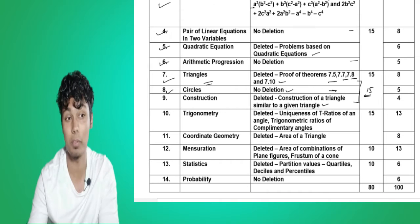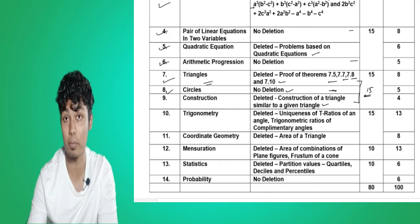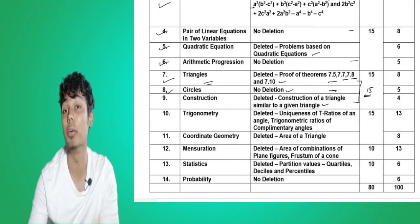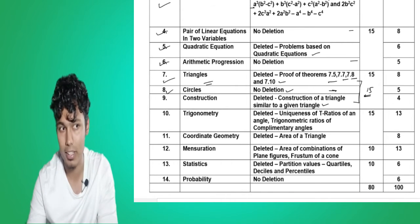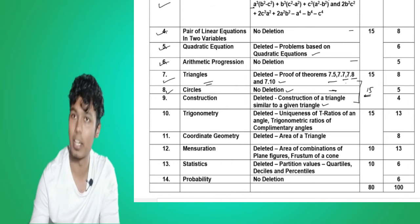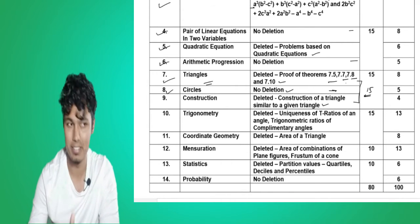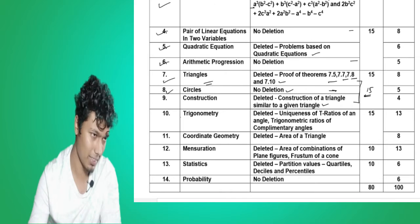From these three chapters — seven, eight, and nine — fifteen marks are asked. Same as before, if you happen to study these three chapters properly, you get fifteen marks. Let us look forward and see the rest.